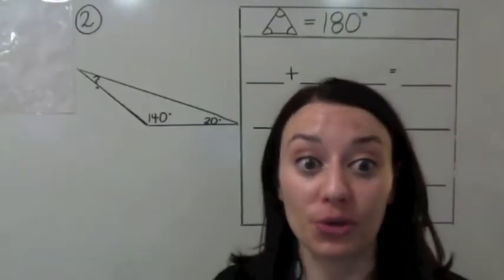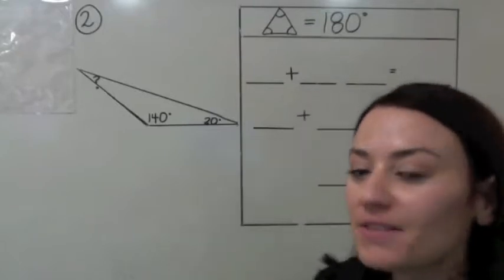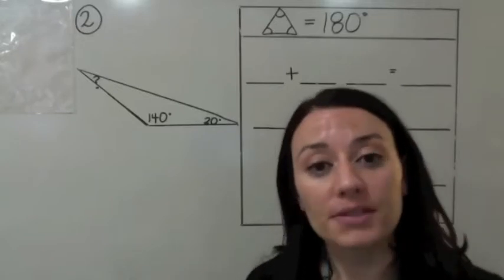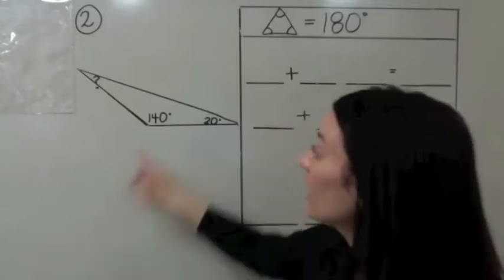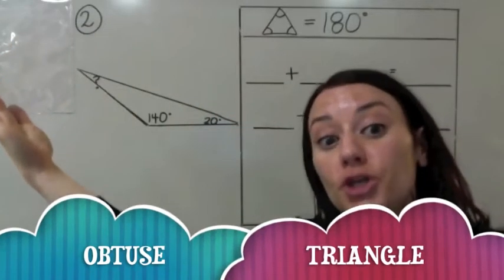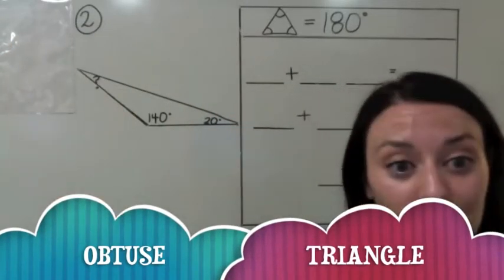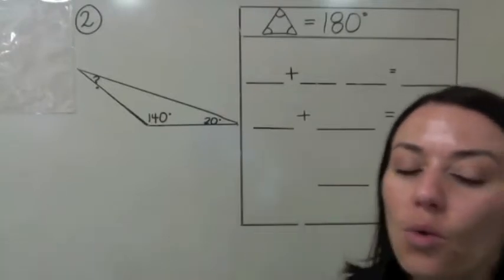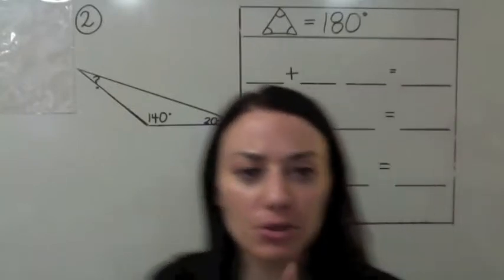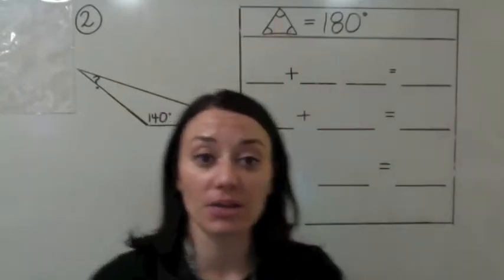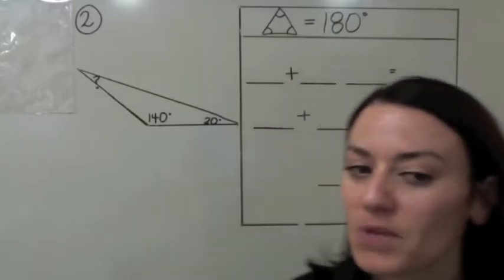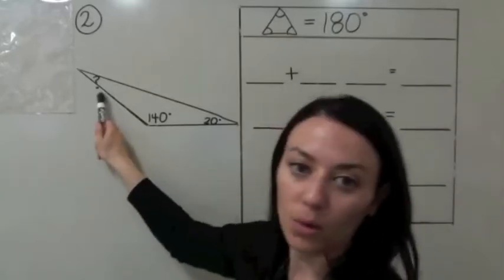Take a look at number two. We're asked to find the missing angle in this triangle. What type of triangle is this? This angle is 140 degrees, so this is an obtuse triangle. We don't know what one of the angles is, but all three angles in a triangle add up to 180 degrees.